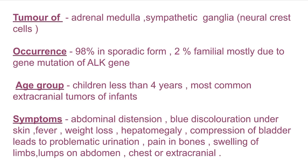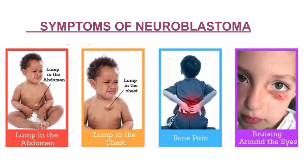These are the symptoms of neuroblastoma. Here in the picture, you can see a lump in the abdomen, a lump in the chest, and bone pain and bruising around the eyes. These are the common symptoms of neuroblastoma.